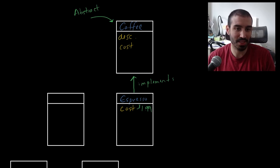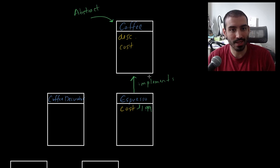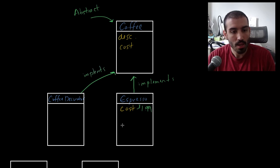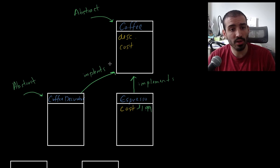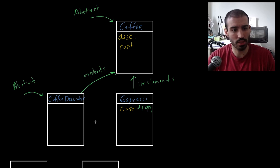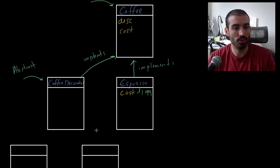Next, we introduce the coffee decorator. This class is also going to be abstract, and importantly it implements coffee — so the coffee decorator is of type coffee. It's going to be used for some clever type-matching magic in the actual implementation. We never instantiate a coffee decorator directly, but since it implements coffee, it matches the same signature and is still considered a coffee object.